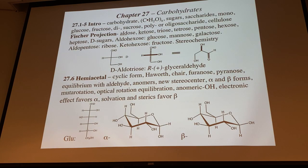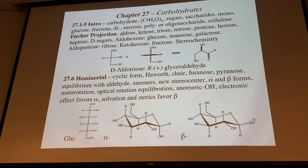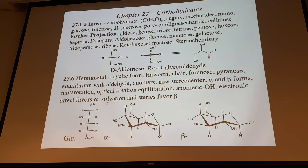Notice chair conformations: in glucose, all stereocenters are in equatorial positions except one. We call this the alpha anomer — where the hydroxyl group is down. The new stereocenter can also be in the up position, which is the beta form. Alpha is favored electronically; beta being fully equatorial is favored sterically. Because they're in equilibrium through the free aldehyde, the sugar is a reducing sugar in relation to the Tollens test. The alpha and beta also have different optical rotations.